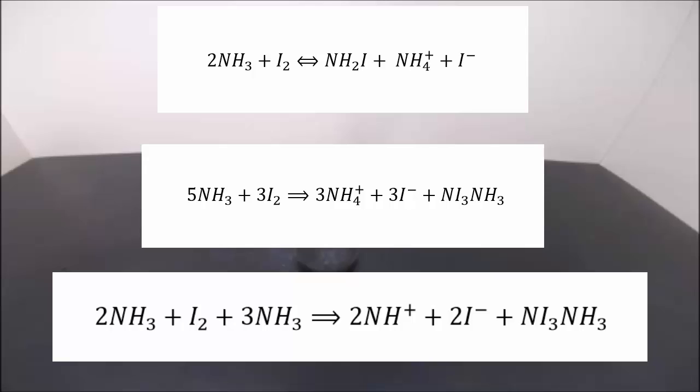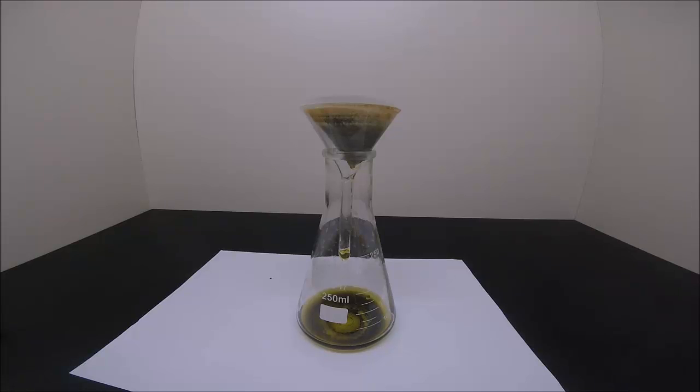Nitrogen iodide further reacts with iodine and ammonia to produce more ammonium ions and iodide ions, and our desirable product nitrogen triiodide. To separate all products, I simply ran through a gravitational filtration process.